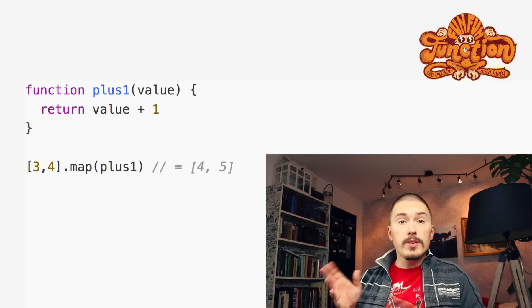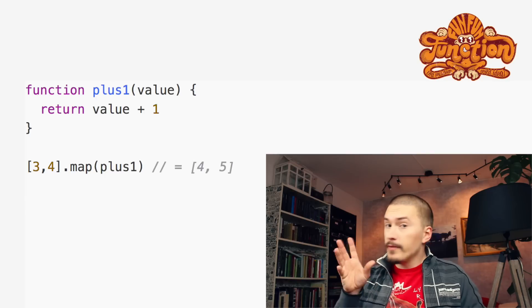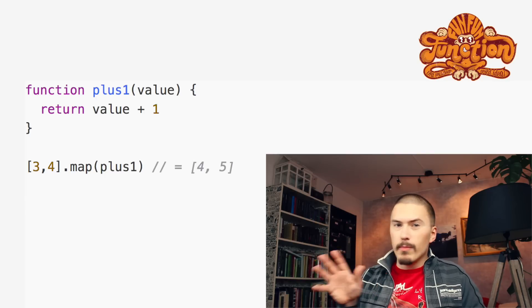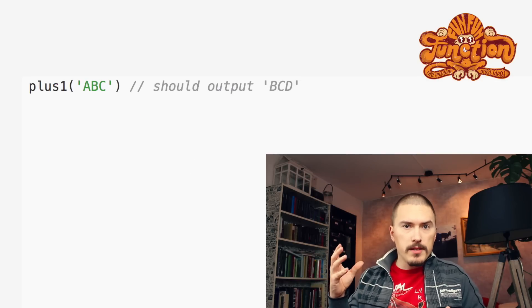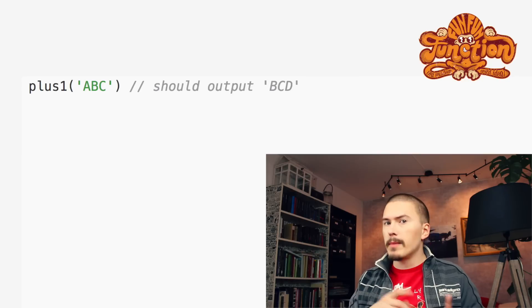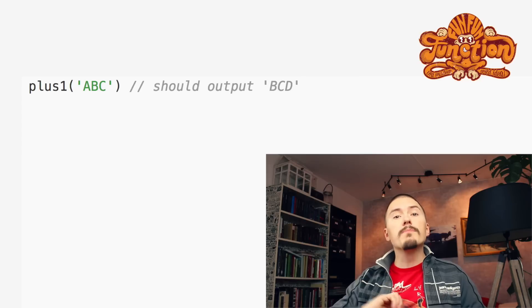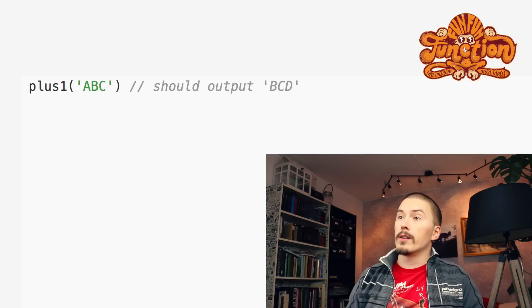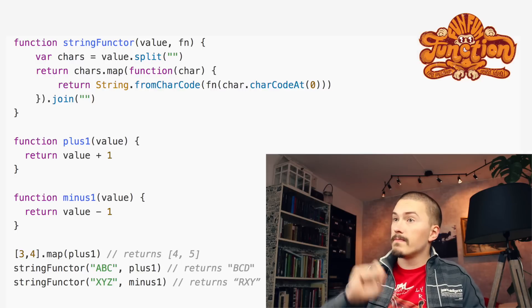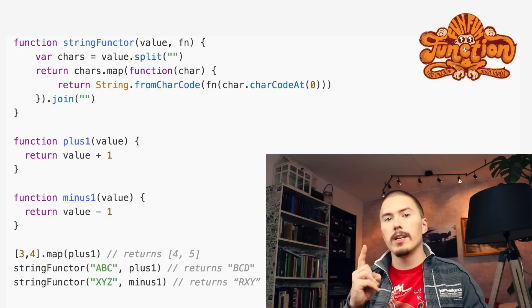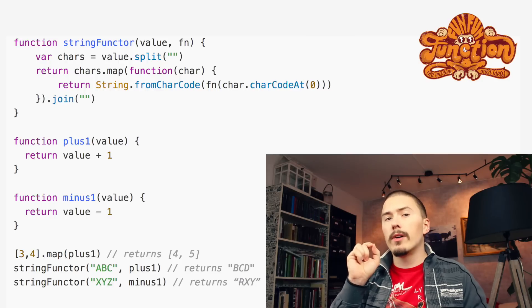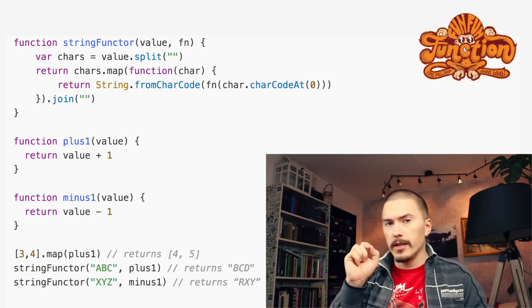By using array map, we've sorted out the array plussing case. But what about the other case — plussing strings going from ABC to BCD? We will solve this by making a string Functor, like this. I really want you to pause the video and take this code in for a little bit before continuing.